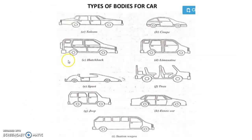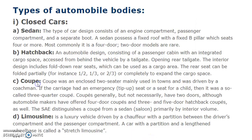These are some of the types of car bodies: saloon car, coupe, hatchback, limousine, sport car, trucks, jeep, estate car and station wagon. Types of automobile bodies include closed cars — sedan, hatchback, coupe and limousine — as well as open cars, sports and convertibles, special types, and transport vehicles like van, truck, articulated vehicle, bus and coaches.